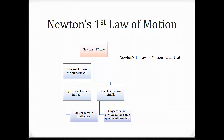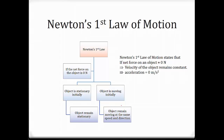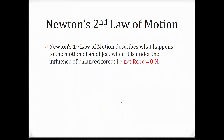Just some revision. If the net force on the object is zero, what it's saying is that the velocity of the object remains constant. And therefore acceleration is equal to zero since the velocity is constant — there's no change in velocity. Newton's first law of motion describes what happens to the motion of the object when it's under the influence of balanced force, or net force equal to zero.